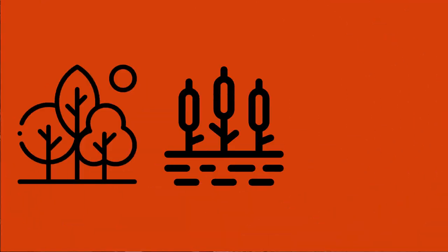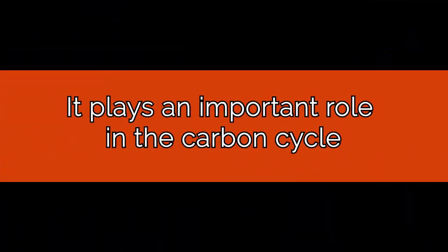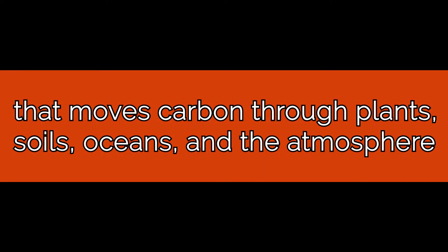A lot of carbon is stored in different ecosystems, such as in trees and in the organic matter in soils and wetlands and in oceans. It's also naturally present as a gas in our atmosphere, mostly in the form of CO2, where it plays an important role in the carbon cycle that moves carbon through plants, soils, oceans and the atmosphere.